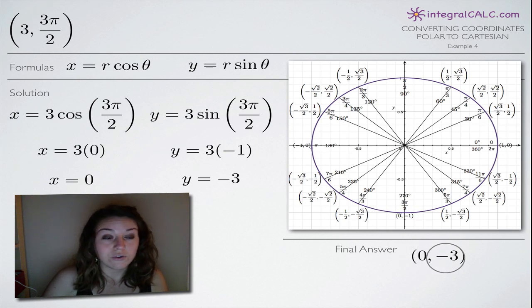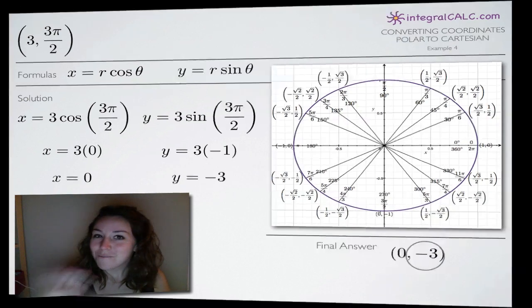So that's how you convert a polar point (3, 3π/2) to a Cartesian point, in this case (0, -3). So I hope that helped you guys and I'll see you next time. Bye!